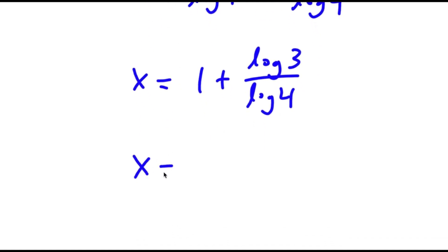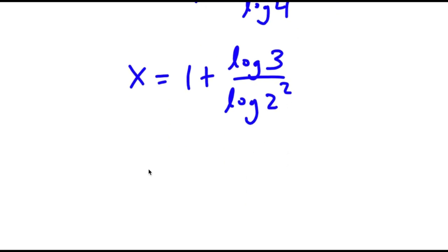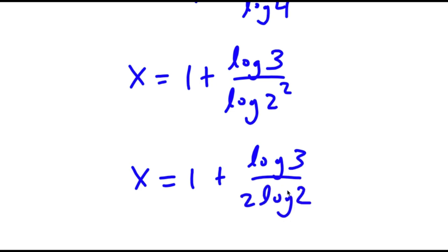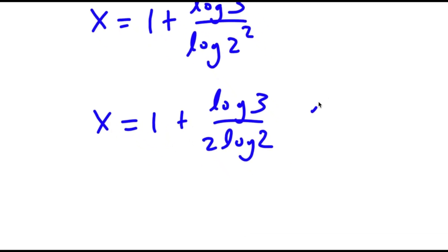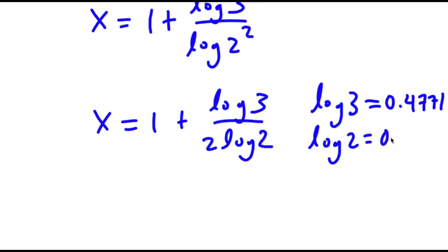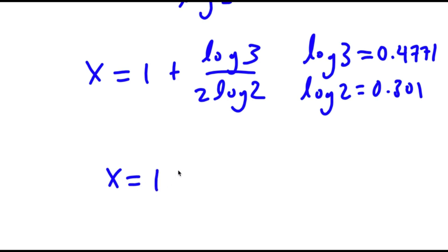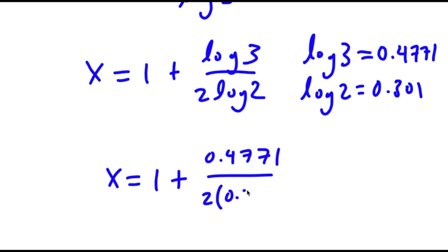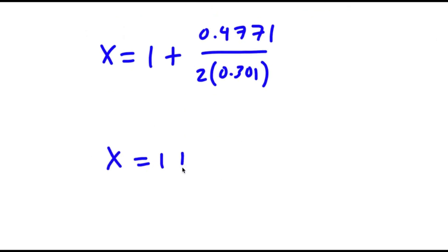Now, log 4 equals log 2 squared, so I have x equals 1 plus log 3 over log 2 squared. And log 2 squared equals 2 times log 2. Log 3 is equal to 0.4771 and log 2 is equal to 0.301. So x equals 1 plus 0.4771 over 2 times 0.301, which equals 1 plus 0.7925, giving x equal to 1.7925.